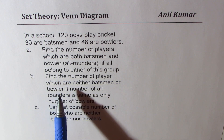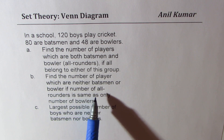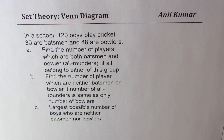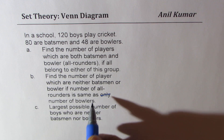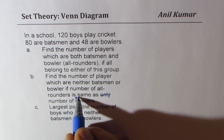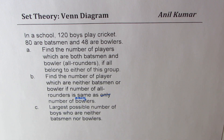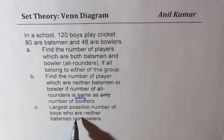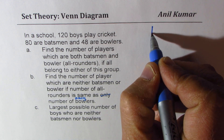Part B: find the number of players which are neither batsmen nor ballers if the number of all-rounders is the same as the number of only ballers — those are not all-rounders, just ballers. And Part C: find the largest possible number of boys who are neither batsmen nor ballers. Cricket is a favorite game for me, so let's talk about it.